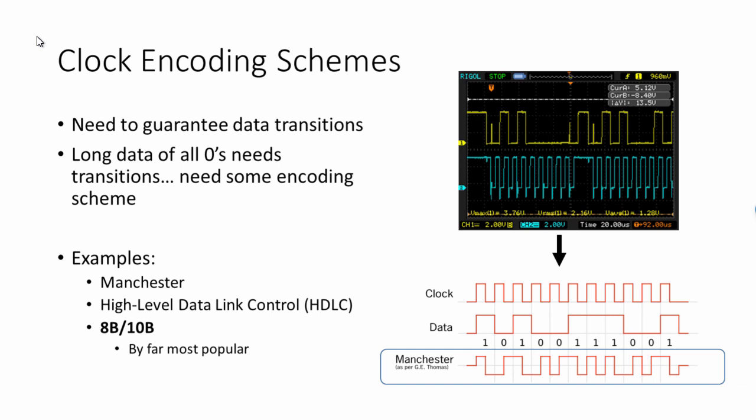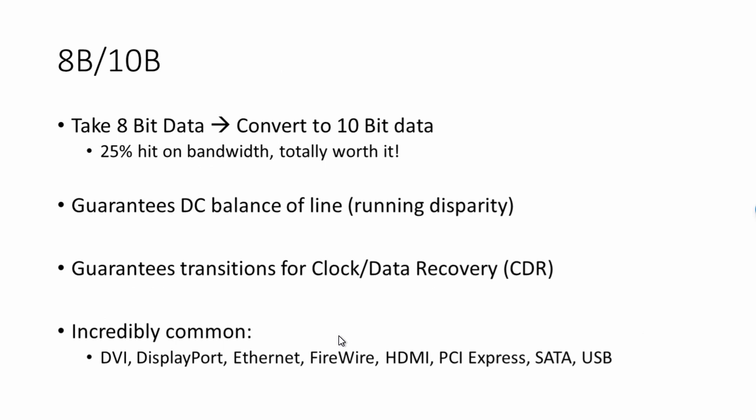Here's an example, something called Manchester encoding. You take clock, you take data, you can create a Manchester encoded version. This contains information to extract both clock and data. This is pretty simple. It's older, not super common these days. HDLC uses its own clock encoding scheme. But 8b10b is by far the most popular. We're going to talk in detail about that because it's kind of cool.